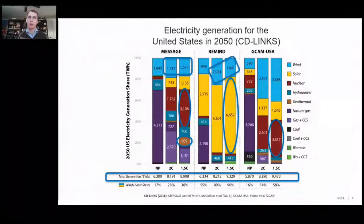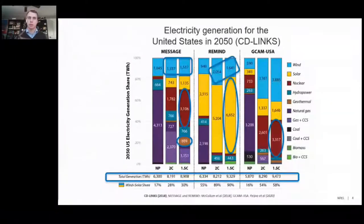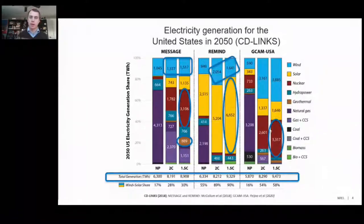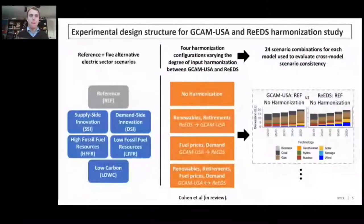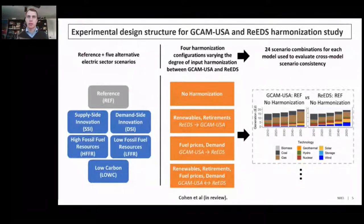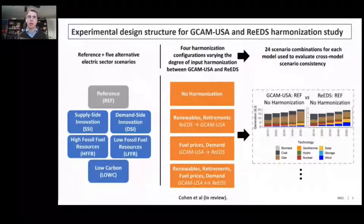From here, I'd like to transition to some work done by NREL and PNNL to harmonize some of the model inputs to reconcile some of these differences. In this study, we are trying to measure the consistency in model electricity generation through cross-model harmonization through an ensemble of scenarios from PNNL's GCAM USA and NREL's REEDS electric sector model.